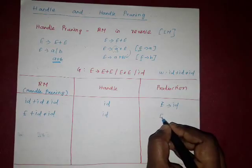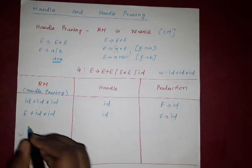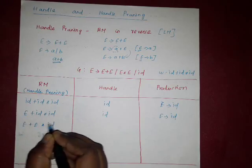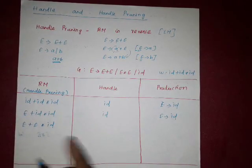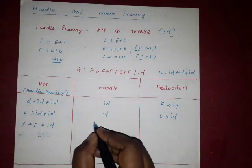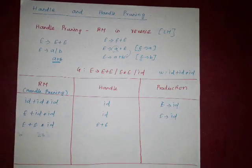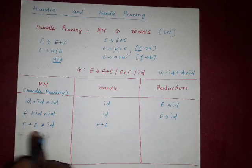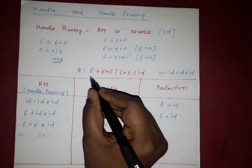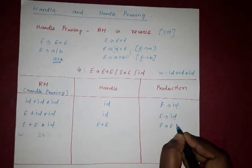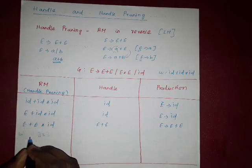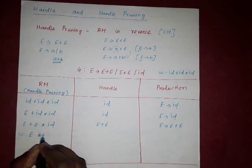This id is also reduced to capital E, so this id is replaced by capital E, leaving remaining star id. In this step, we can reduce E plus E by E. So the handle symbol is E plus E — which symbol can be reduced, that symbol is known as handle. So E plus E is a handle symbol, and E plus E is also reduced to E, since E tends to E plus E. So E plus E is reduced to E, remaining star and id.